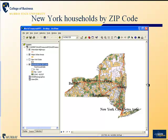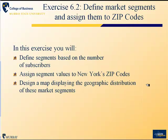This is the type of map you'll produce. It indicates the number of households by zip code who are subscribers to World Treasures' newsletter and also the demographic characteristics of the New York market.